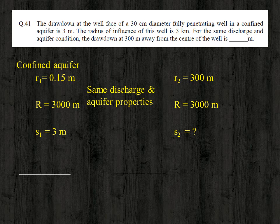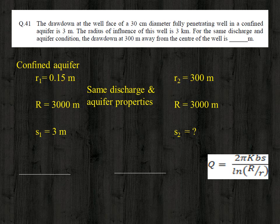To solve this problem we use the Thiem equation for discharge in a confined aquifer: Q = 2πkbS / ln(R/r), where k is the hydraulic conductivity, b is the thickness of the aquifer, S is the drawdown, R is the radius of influence, and r is the radius of the well or the distance from the center.